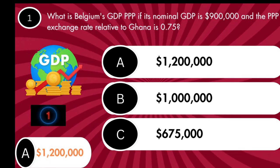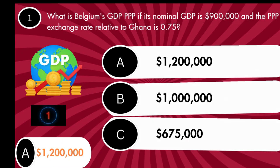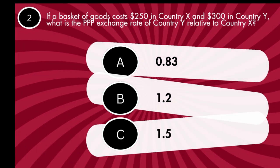The answer is $1,200,000, obtained by dividing $900,000 by 0.75.